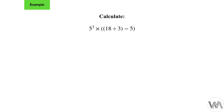Our next example is: 5 to the power of 3 times bracket bracket 18 divided by 3, close the bracket, minus 5, close the bracket. We have 18 divided by 3 nested inside the bracket with the subtraction of 5. Our first step is to do the nested bracket: 18 divided by 3 is 6.